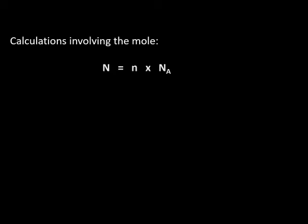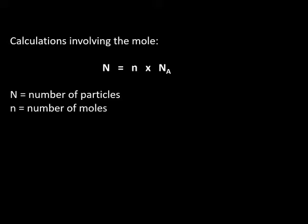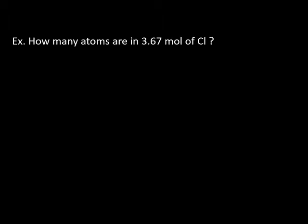How do we use calculations for this? The simple equation is N = n times Nₐ. There are lots of N's here, so let's differentiate them: capital N is the number of particles, lowercase n is the number of moles, and Nₐ is Avogadro's constant. Calculators are really required in order to do these kinds of calculations — there are very few people who can do this sort of thing with just pen and paper. Let's do our first example: how many atoms are in 3.67 moles of chlorine?